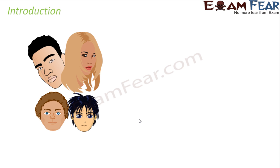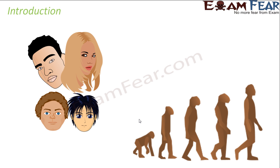This is going to be really interesting. In class 10, we will only look at the basics of heredity — we will not get into too much detail. In the second half of the lesson, we are going to talk about evolution. Evolution is related to the word 'evolve,' meaning to originate. We will see how so many different types of living organisms actually came up, how many varieties originated, and how different types of living organisms are related to each other.